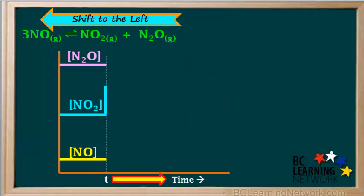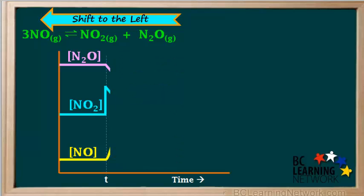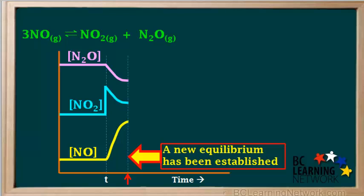Let's look at the graph and see what happens after we have added the NO₂ at time T and the equilibrium shifts to the left. You can see that the concentrations of the products N₂O and NO₂ are decreasing, while that of the reactant NO is increasing. This is what we had predicted. Watch as time continues. At this point, the curves have started to level off again — a new equilibrium has been established.